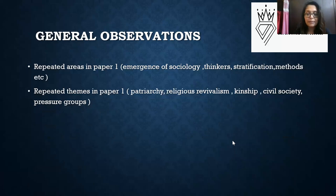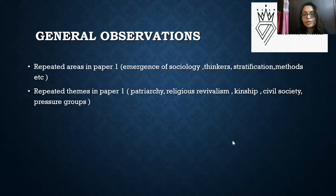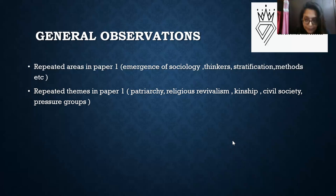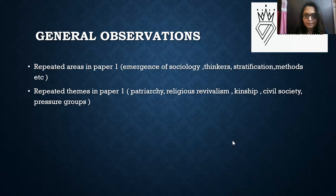Repeated themes in Paper 1 include kinship — how kinship is changing in modern society — religious revivalism, patriarchy, civil society, and pressure groups in your politics and society portion. These are very recurrent themes that appear almost every year. If you prepare these themes properly, sociology optional is very manageable and within your hands.